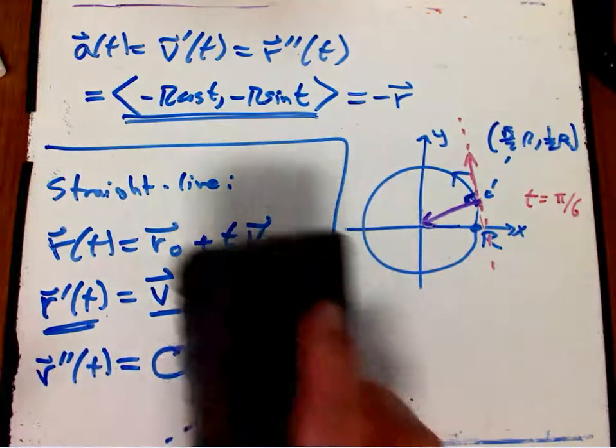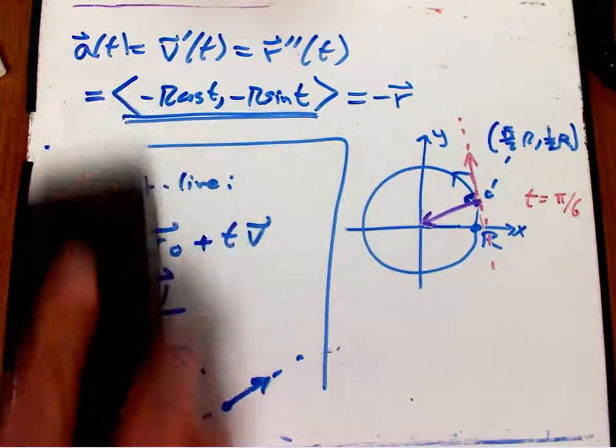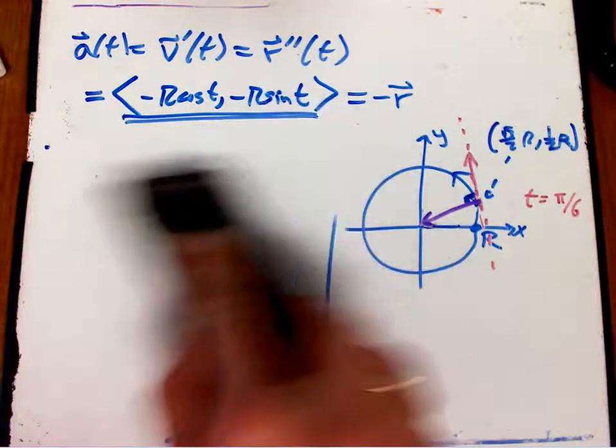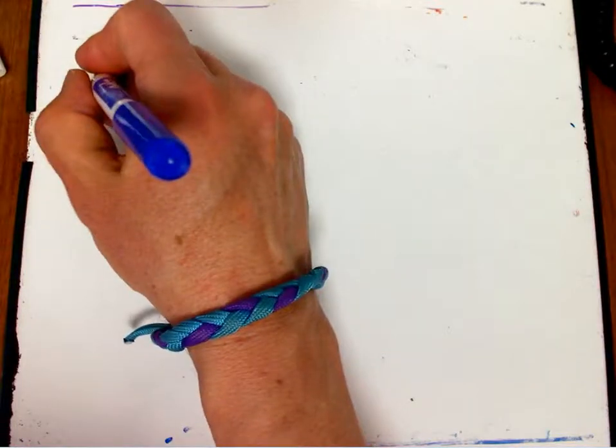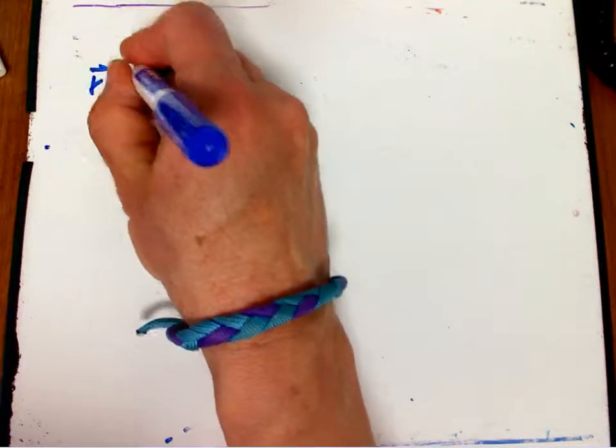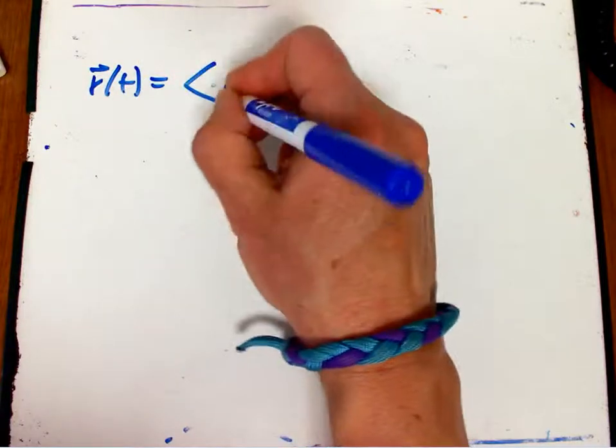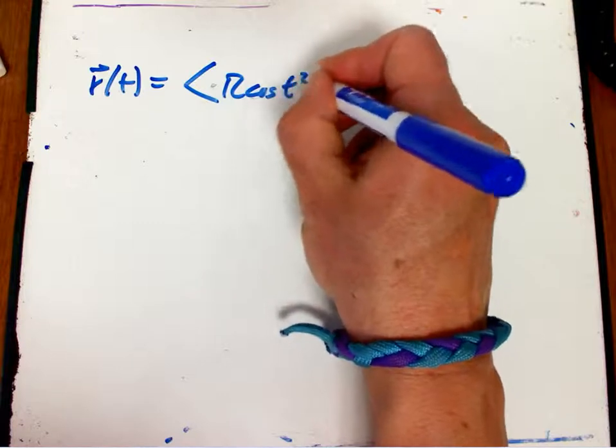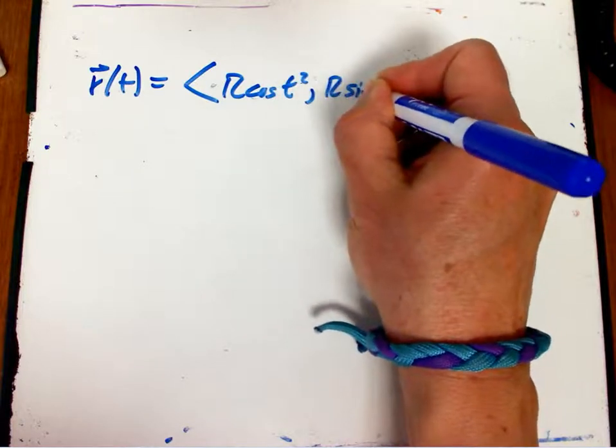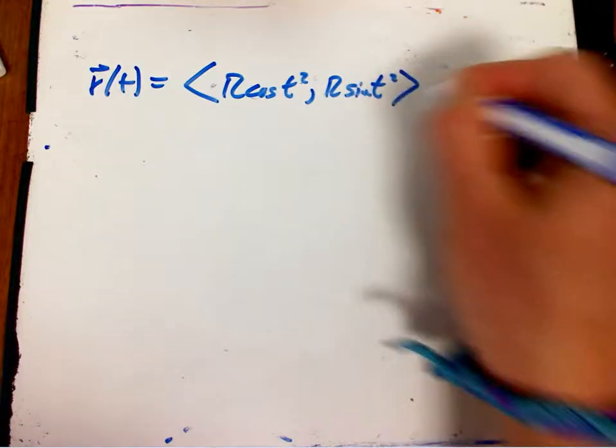I do want to do one more while we're on the subject. This is a very simple example, but it's so profound. It's so nice. Uniform circular motion is a big deal. But what if I had a slightly different situation? r of t is like r cosine t squared, r sine t squared.